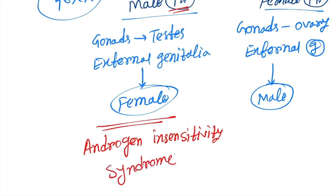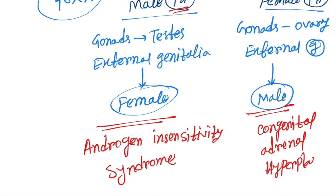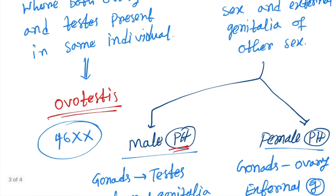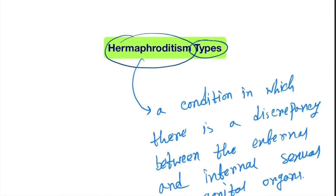And in case of female pseudohermaphroditism, the most common cause is congenital adrenal hyperplasia.